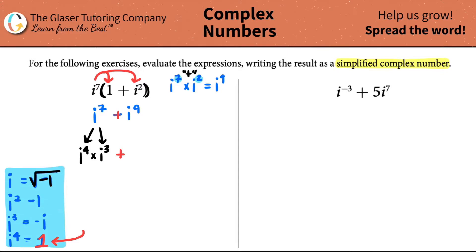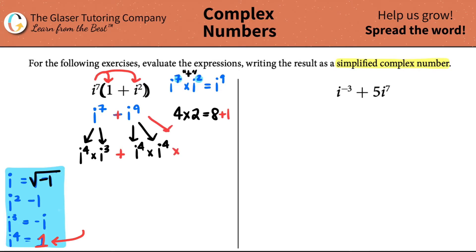Let's try it again in terms of i to the fourth. Four times two is eight — that's as close as I can get to nine without overshooting. So I need two i to the fourths, giving me i to the fourth times i to the fourth, which is eight. Then I need one more i to get to nine. So i to the ninth equals i to the fourth times i to the fourth times i. Those are my two separations for i to the seventh and i to the ninth.